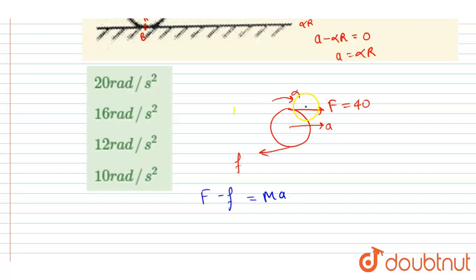So I will put m equals to 5 in the equation. And if I write the torque equation, you could see the capital F and small f both are producing the torque in same direction.